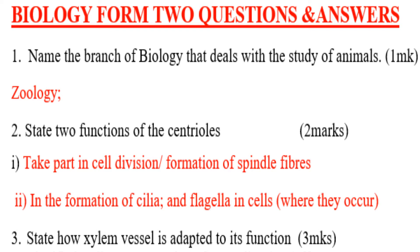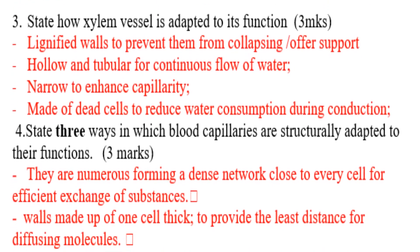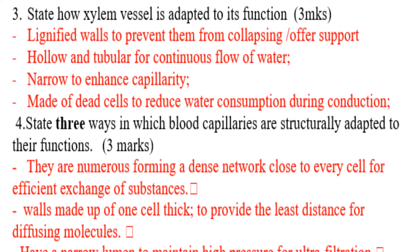Question number three: State how the xylem vessel is adapted to its function. Number one, they are lignified — they have lignified walls to prevent them from collapsing, and the lignified walls offer support. Number two, they have a hollow tubular shape for continuous flow of water. Number three, they are narrow to enhance capillarity.